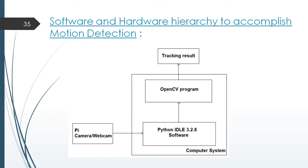The software and hardware hierarchy to accomplish motion detection is as follows. We will use a Pi camera or any camera. The camera will feed the output to the computer system with a Python software running. The Python software will then track the moving object.